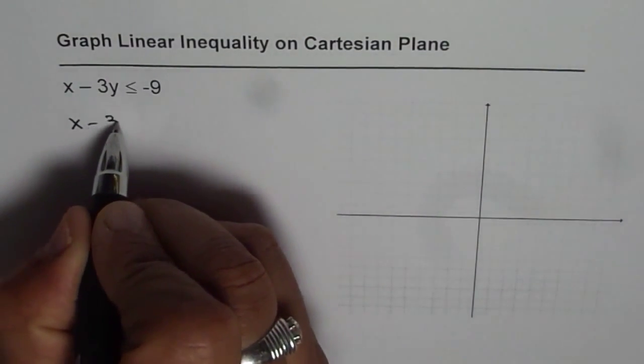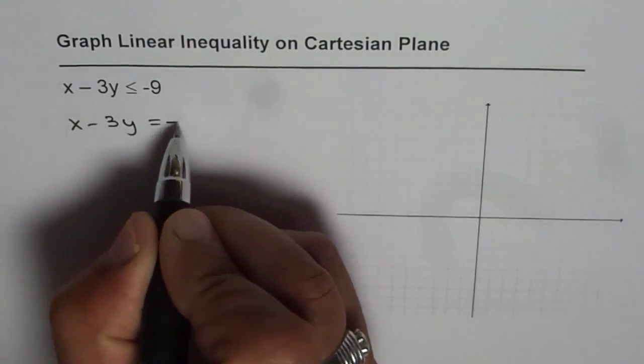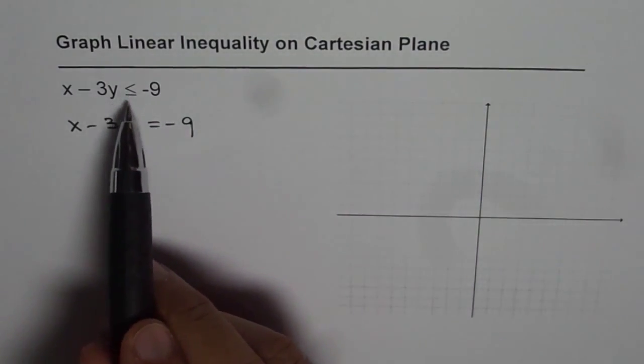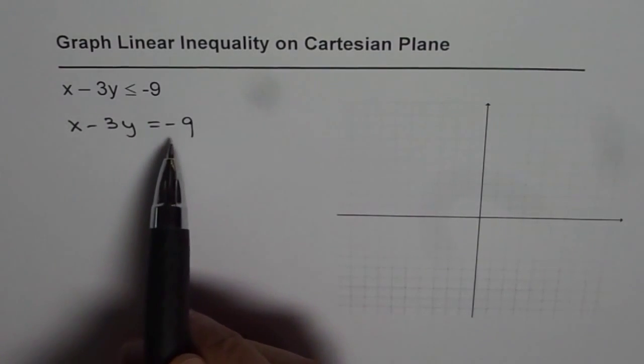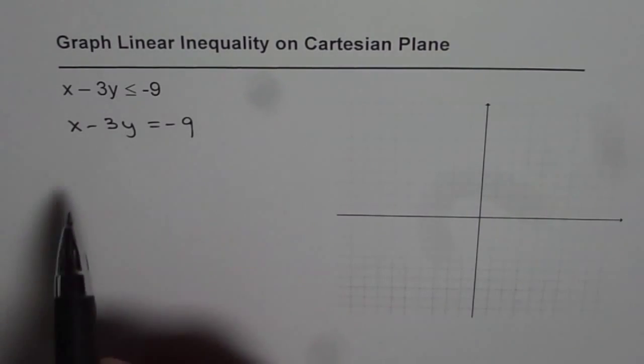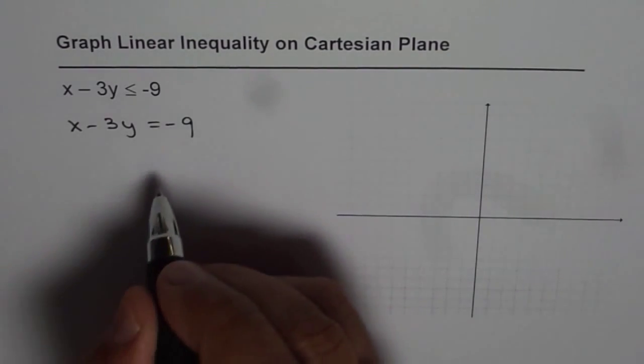We can write this as x - 3y = -9. Remember, since the inequality is less than equal to, the line is part of the solution.